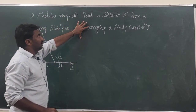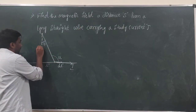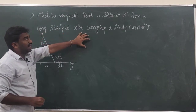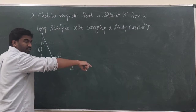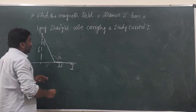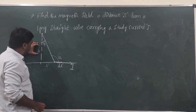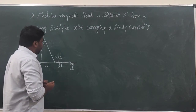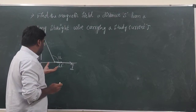Find the magnetic field at a distance s from a long straight wire carrying a steady current i. So this is my long straight wire which carries a current i. My aim is to find what is the magnetic field at a point P at a distance s from this current wire.